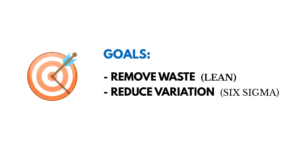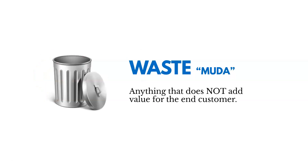As a reminder, there are two goals in Lean Six Sigma. The first is to remove waste — that's the goal of Lean. Reducing variation is the goal of Six Sigma. In Lean, we're trying to remove waste, and waste is sometimes referred to as Muda in Lean Six Sigma.